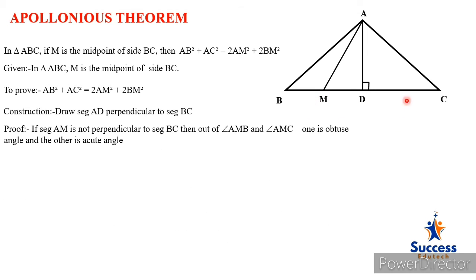After drawing the perpendicular AD to BC, we divide the triangle into two parts.